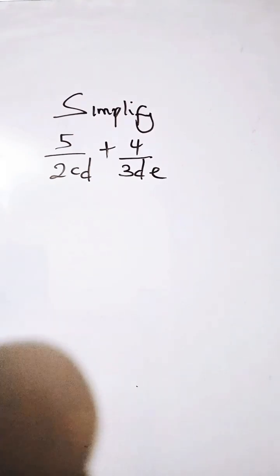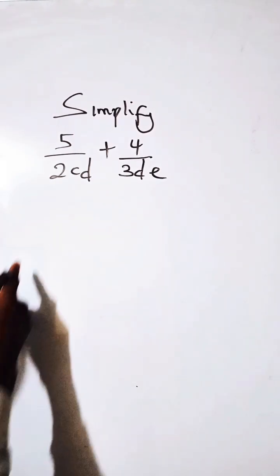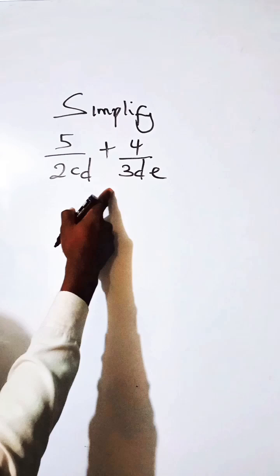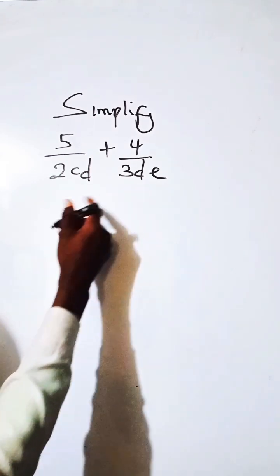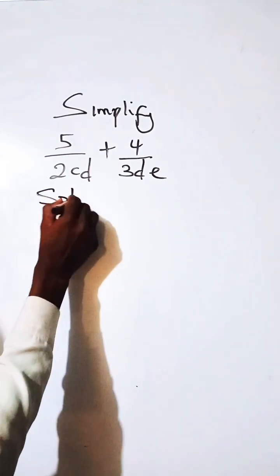The question says simplify this expression. We have 5 over 2CD plus 4 over 3DE. So how do we do this solution?